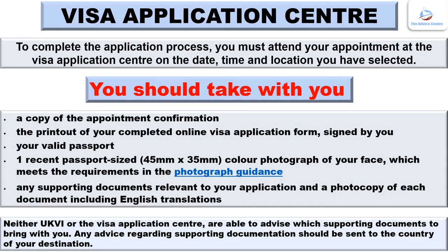Visa Application Centre: To complete the application process, you must attend your appointment at the visa application centre on the date, time and location you have selected. You should take with you: a copy of the appointment confirmation, the printout of your completed online visa application form signed by you, your valid passport, one recent passport-sized colour photograph of your face which meets the requirements in the photograph guidance, and any supporting documents relevant to your application with a photocopy of each document including English translations.